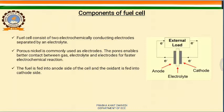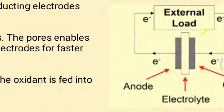Porous nickel is commonly used as the electrode material. The fuel is fed into the anode side of the cell and the oxidant is fed into the cathode side. The construction is simple: two electrodes separated by an electrolyte with an external load connected between the anode and cathode.